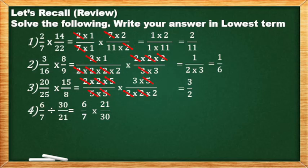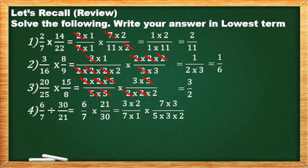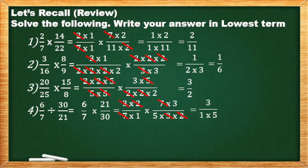Kunin na natin ang prime factor ng 6 and 7, which is 3×2 all over 7×1. Times of 7×3 — the prime factor of 21. Prime factor of 30 is 5×3×2 — kung naiisip nyo yung 5×6, i-expand lang yung 6, which is 3×2. Cancel na tayo: may nakikita akong 3 sa taas, saka sa baba; may nakikita ulit akong 2 sa taas, saka sa baba; meron din akong nakikita ng 7. So ang naiiwan sa taas ay 3, ang naiiwan sa baba ay 1 and 5. Multiply — the answer is 3/5.